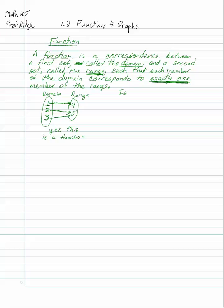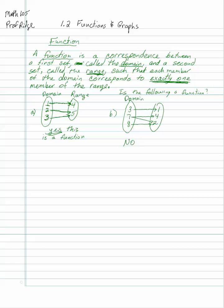Another example: if I have domain elements three, seven, eight and range elements one, four, two — where three gets assigned to one, seven gets assigned to four, and seven also gets assigned to two, and eight gets assigned to two. On this one, we would say no, it's not a function. It's not because the element seven in the domain is getting assigned to two numbers in the range — four and two. So that's no, it's not a function.